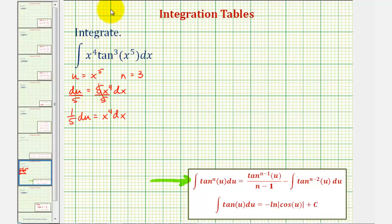Now let's write the integral in terms of u. Since x^4 dx equals one-fifth du, we factor out the one-fifth and have the integral of tan^3(u) du.